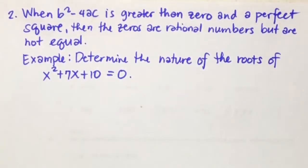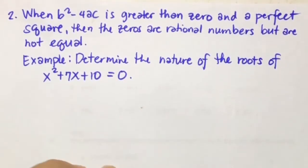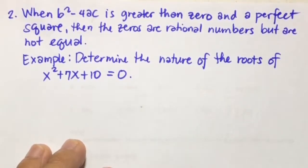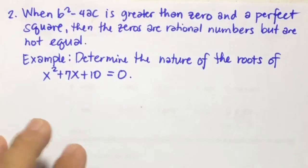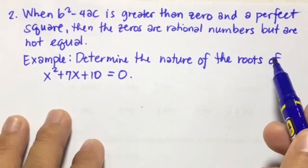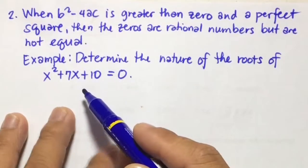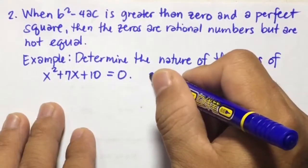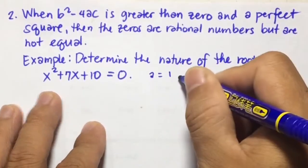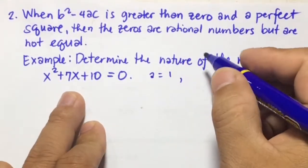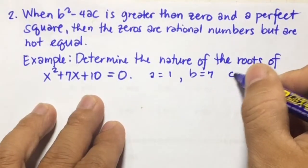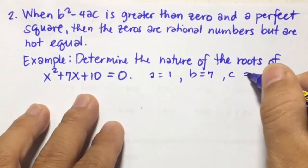Number 2: when b squared minus 4ac is greater than 0 and a perfect square, then the zeros are rational numbers but are not equal. For example, determine the nature of the roots or zeros of x squared plus 7x plus 10 equals 0. So a is equal to 1, b, the numerical coefficient of x, is 7, and c, the constant term, is equal to 10.